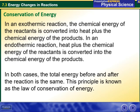In an exothermic reaction, the chemical energy of the reactants is converted into heat plus the chemical energy of the products. In an endothermic reaction, heat plus the chemical energy of the reactants is converted into the chemical energy of the products. In both cases, the total energy before and after the reaction is the same — this principle is known as the law of conservation of energy.